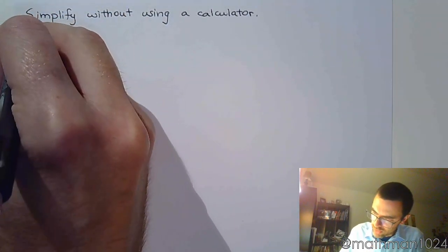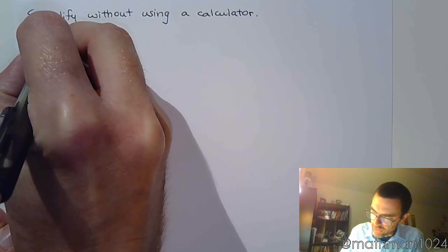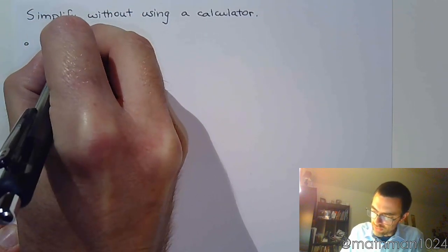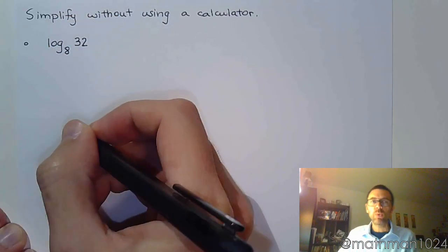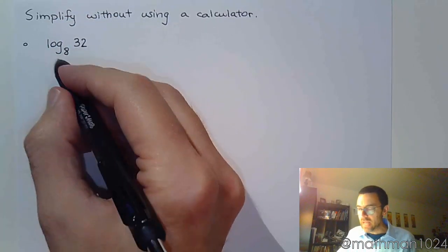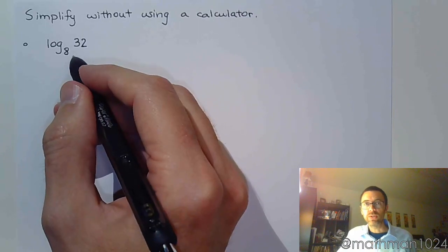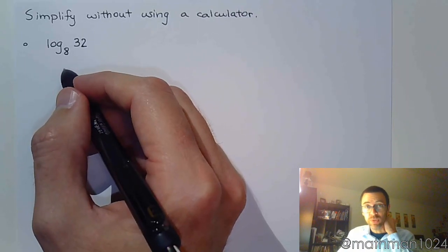Starting off with this, let's say log base 8 of 32. Now in the past, we would have rewritten this and we would have said 8 to the x equals 32. It's an exponential equation and we solve it after that.